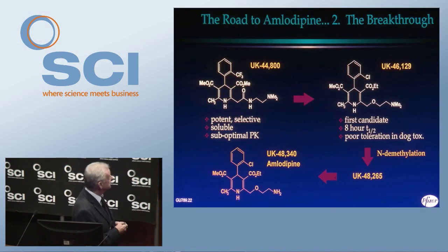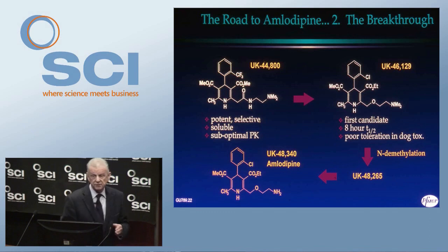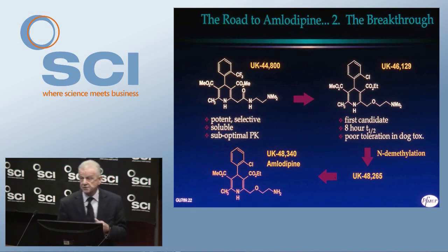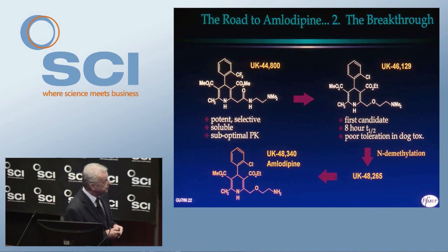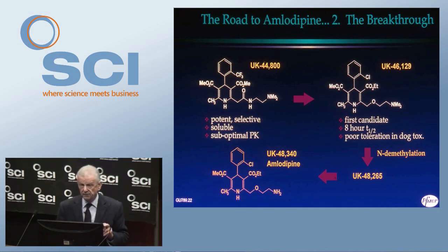The first thing we had to do was some chemistry. We weren't sure whether we could put a substituent at this position — the literature said we couldn't. We first made a compound with an amide and an amine, and it was potent — nanomolar, very potent — selective, greater than 10-fold, and soluble. But the pharmacokinetics and duration of action were not good enough. So we then went to the compound we really wanted to make. With the oxygen and two carbons in the basic centre, this was compound 46129, our first candidate. The half-life in the dog was eight hours — nifedipine has a half-life of half an hour — so we'd already gone from half an hour to eight hours, which is a dramatic improvement.